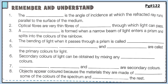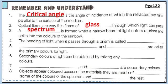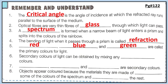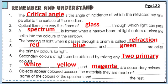Now open page number 122 and we will do the objectives. The critical angle is the angle of incidence at which the reflected ray runs parallel to the surface of the medium. Optical fibers are very thin fibers of glass through which light can pass. A spectrum is formed when a narrow beam of light enters a prism and splits into the colors of the rainbow. Red, blue, and green are the primary colors for light; secondary colors are obtained by mixing any two primary colors. White, yellow, and magenta are secondary colors.